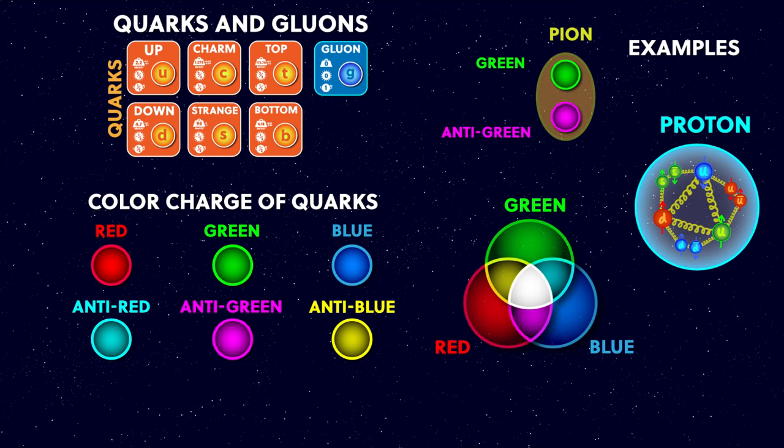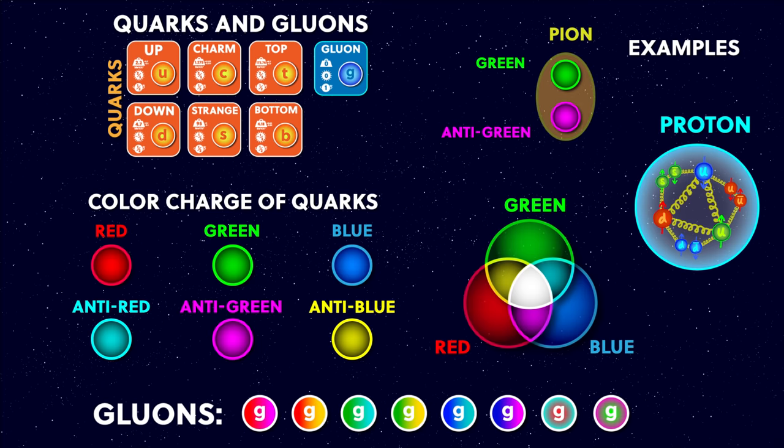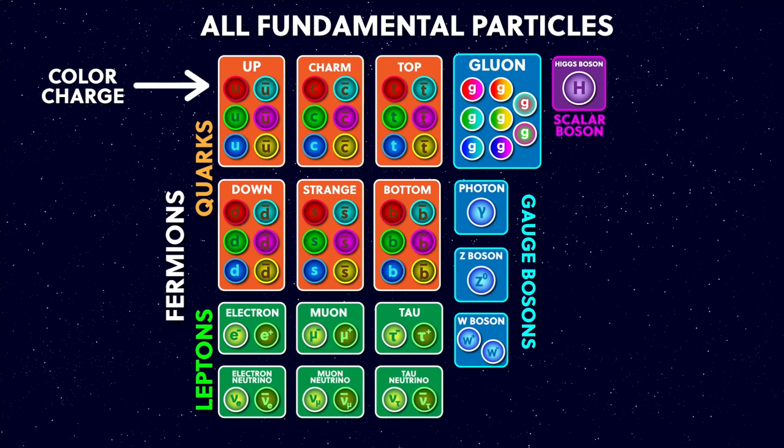Quarks can interact with each other through the strong force, and this is where the gluons come in. There are actually eight kinds of gluons, each with a different colour anti-colour pair, and through these gluons the different quarks interact with each other. If I add the colour charges to the standard model diagram along with all the anti-particles, we get this — actually all of the fundamental particles that make up the universe, which I think is important to show because there are a lot more than in the normal standard model diagrams.